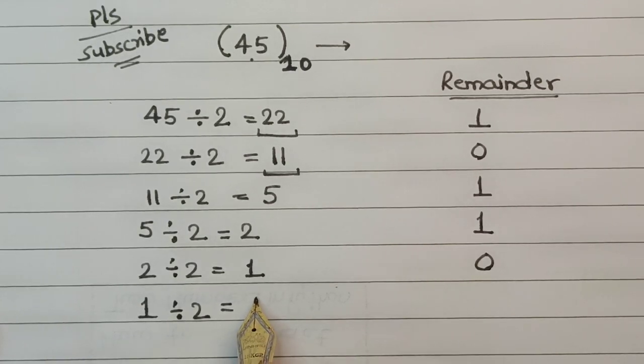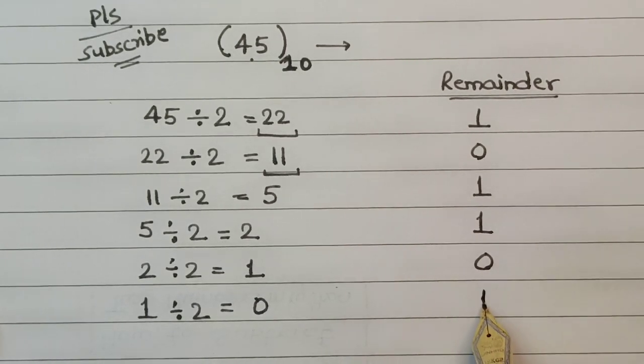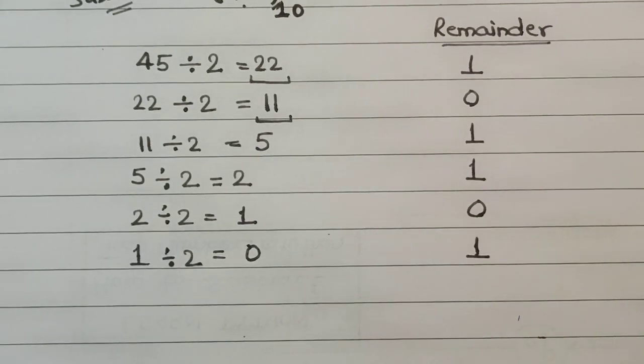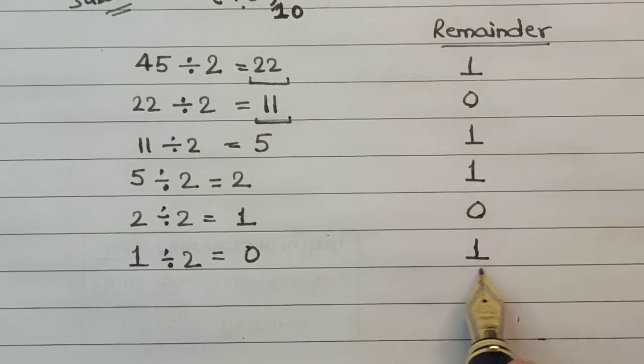Now in the very last step when we divide 1 by 2, this basically cannot be completely divided, so we get the quotient as 0 because we have to shift a decimal, with a remainder as 1. So now when we have got the complete list of remainders here, the very last digit